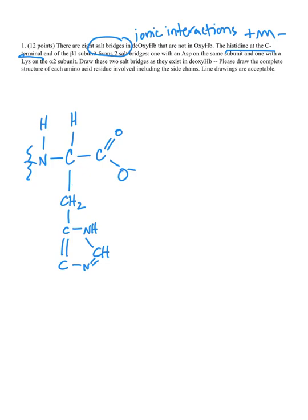If there's a salt bridge with histidine and aspartate, we know aspartate has a negative R group, so here's a little salt bridge and here is the carboxyl group of aspartate.